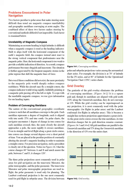But even if these conditions did not exist, the mere proximity to the magnetic pole would sharply reduce compass usefulness. While the aircraft may fly a straight course, the compass indicator would swing rapidly, faithfully pointing at a magnetic pole passing off to the left or right. To cope with the unreliable magnetic compass, we use gyro information for our heading inputs.